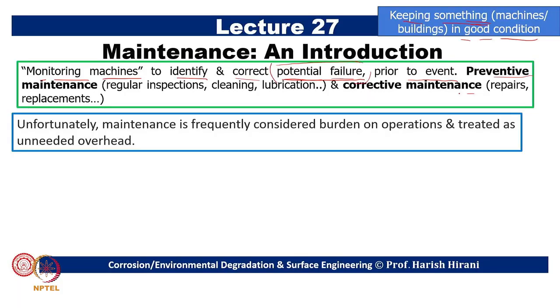Two common maintenance approaches have been utilized. One is preventive maintenance — regular inspection like removing dirt, oiling, or cleaning, which can be time-bound, for example once a week or once in 14 days. The other is corrective maintenance, where we keep a large inventory of items and whenever there is a failure we replace that part. I will not describe these two in detail; we will focus on condition-based monitoring.